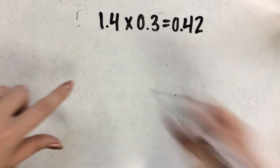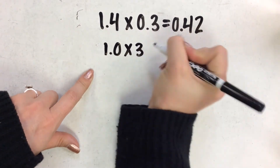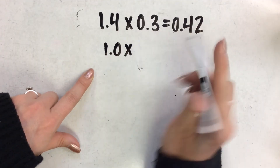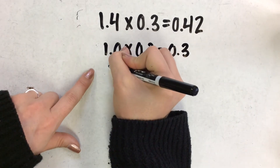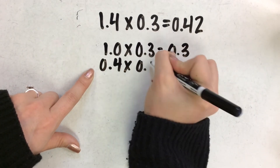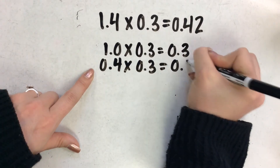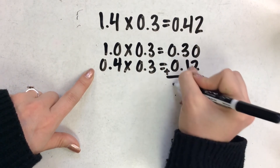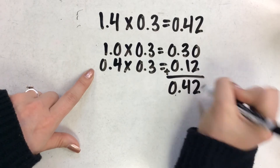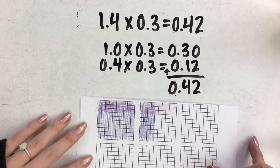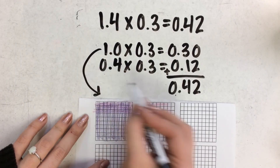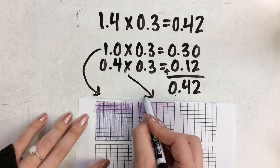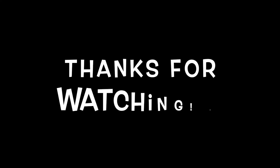We can think about it just like this: one whole times three tenths equals three tenths, and four tenths times three tenths equals twelve hundredths. Then we add those two together to get forty-two hundredths — just like our model shows. This is our three tenths, and this one is our twelve hundredths.